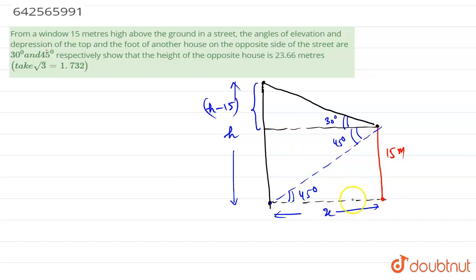Now first in this triangle, suppose this is ABC. So in triangle ABC, tan 45 degrees is equal to perpendicular that is 15 upon base that is x. So 1 is equal to 15 upon x. So x is equal to 15 meters.